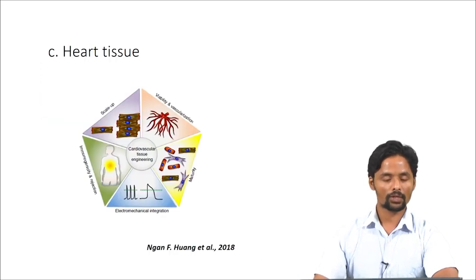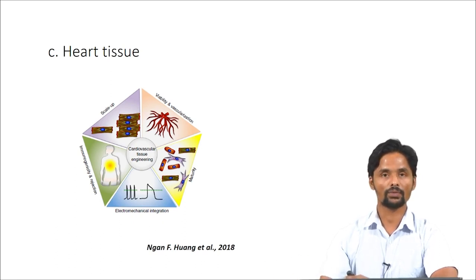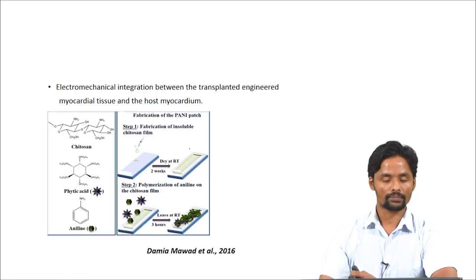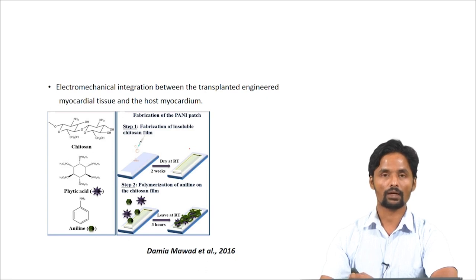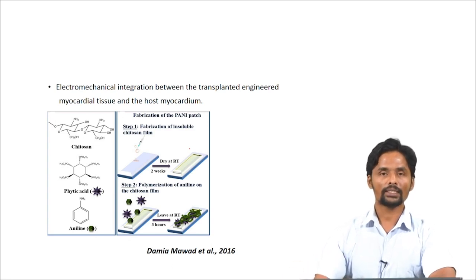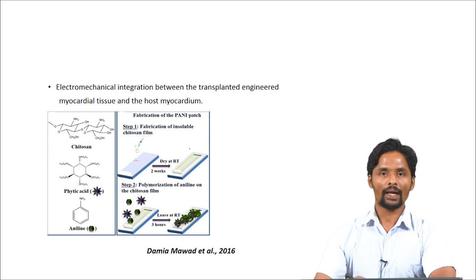The third tissue we will talk about is heart tissue. Here are a few challenges listed in heart tissue engineering — we will discuss only those related to scaffold fabrication. Electromechanical integration between the transplanted engineered myocardial tissue and the host myocardium is one of the challenges. A recent development is the usage of conducting polymers. For example, polyaniline is a conducting polymer whose conductivity is dependent on a proton-based doping process.